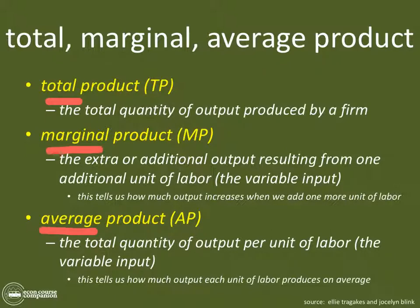The best way to think about this is if you wanted to figure out the total, marginal, and average height of everybody in a fourth-grade classroom — let's say there are ten kids. The total height would be if you added up all of their heights — that's how tall they would be collectively. The marginal height would be if you added an 11th person; how tall is that person? That's the marginal height. And the average height of all ten people would be to add them all up and divide by the number of people in the room.